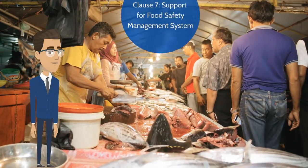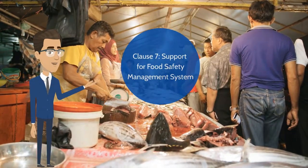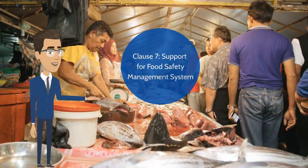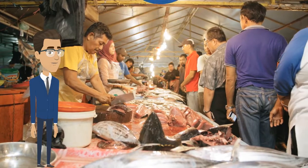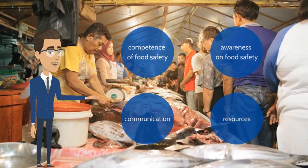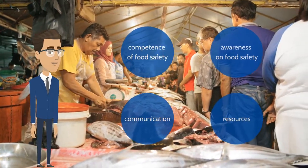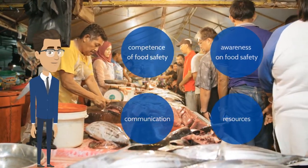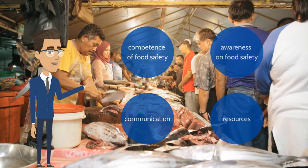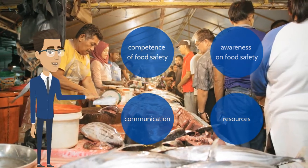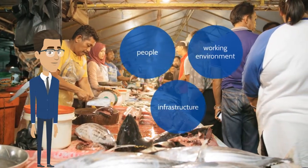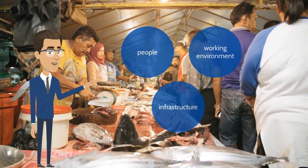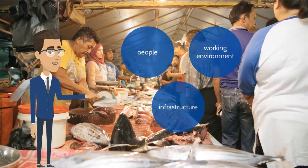Clause 7 is support for the food safety management system. The organization should determine the competence of food safety, awareness on food safety, communication, and resources for food safety such as people, infrastructure and working environment.